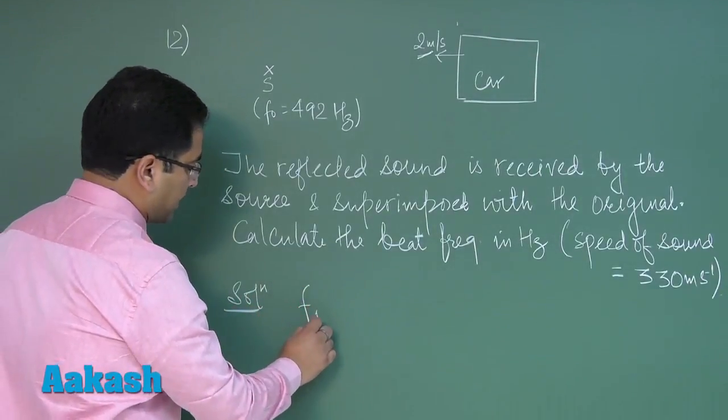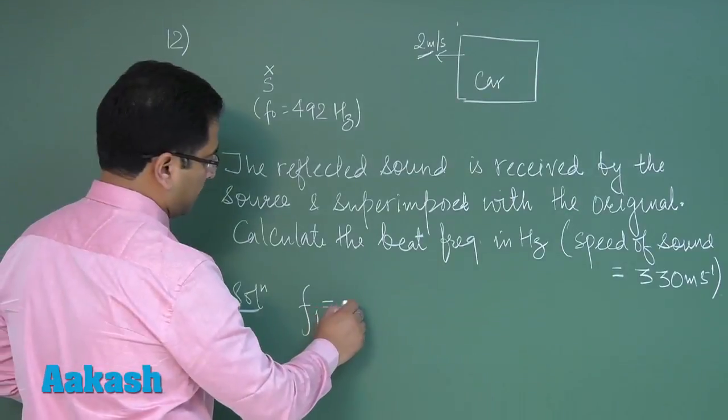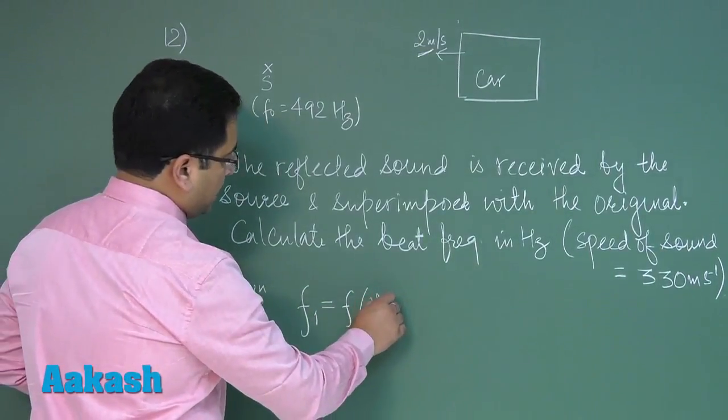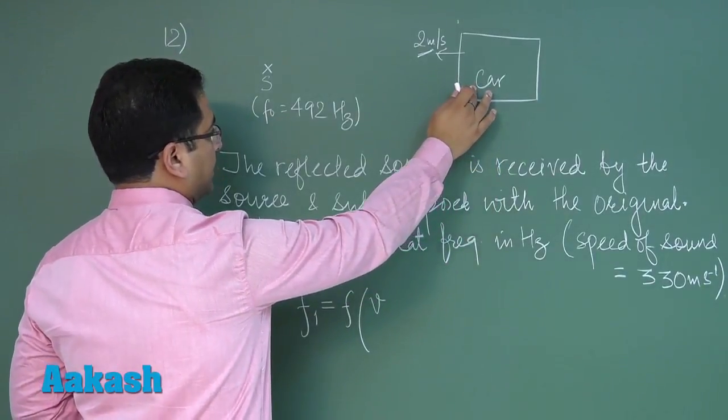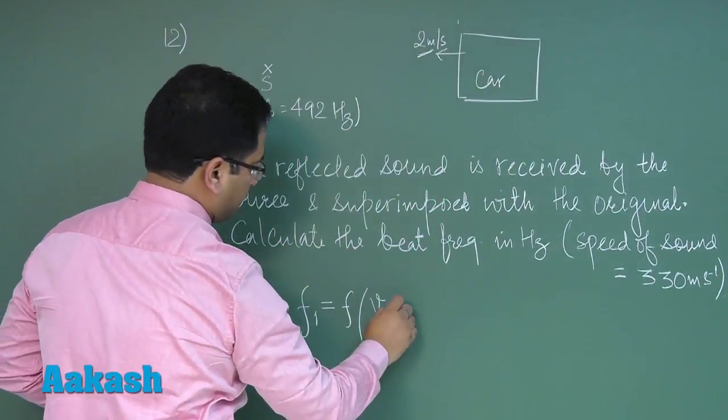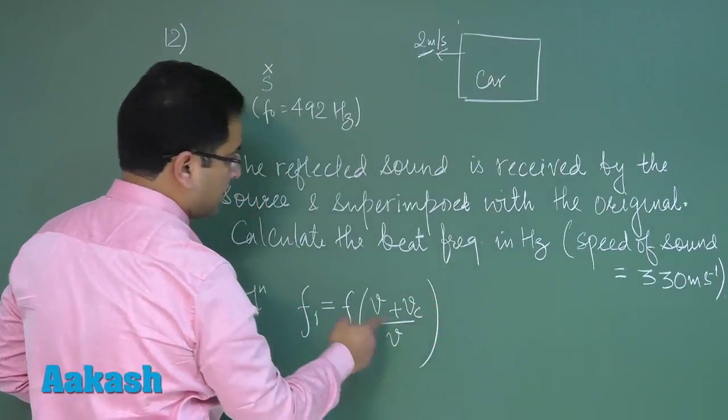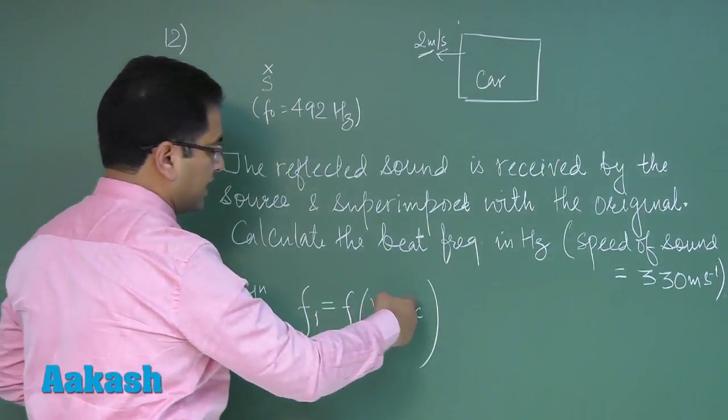received by the car. Let me call it F1. It would be F₀, because this is the detector and the detector is approaching, so plus Vc divided by V, where V is speed of sound and Vc is speed of car. This F1 is the frequency received by the car.